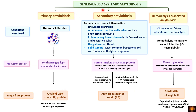In systemic amyloidosis, under primary amyloidosis, the condition involves plasma cell disorders where tumor plasma cells produce immunoglobulin light chains. The precursor protein is the immunoglobulin light chain, and the major fibril protein is amyloid light chain protein.